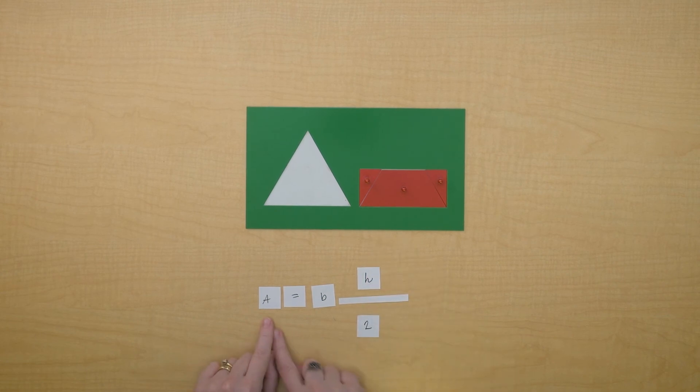So to find the area of the triangle, we can take its base and multiply it by half of its height to find the area.